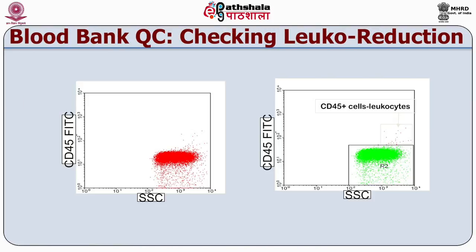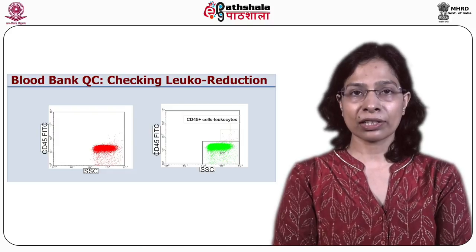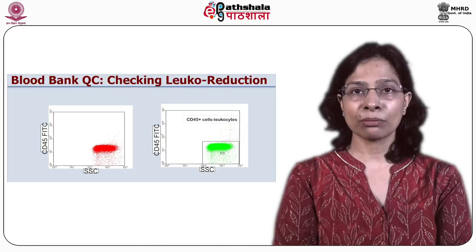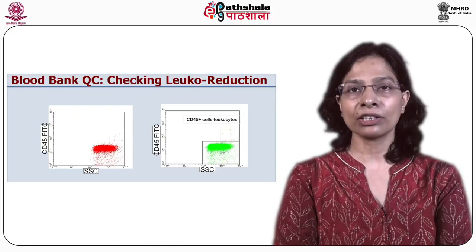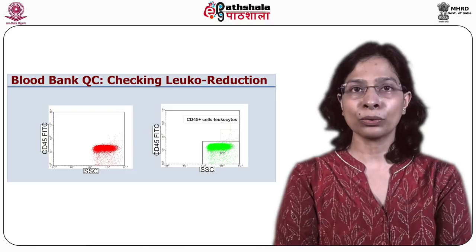Flow cytometry is being increasingly used in blood banks to assess leukocyte contamination in leukocyte-reduced blood products. Leukocytes collected along with other cellular elements in whole blood are considered contaminants of RBCs and platelets, contributing to severe adverse consequences such as immunologically mediated effects, infectious disease transmission and reperfusion injury. CD45 has been used to identify contaminating leukocytes, and by counting them we can check the quality of leukoreduced blood products.